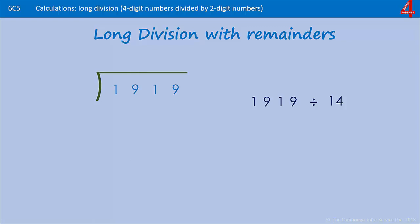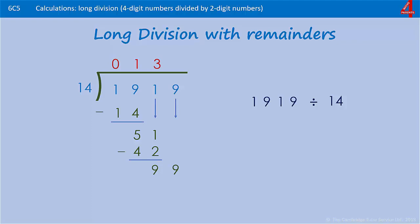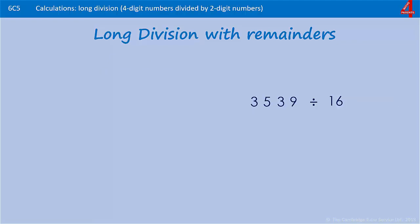To finish off, we're going to do a couple where there will be remainders. 1919 divided by 14. 14 into 1 doesn't go. 14 into 19 goes once — one lot of 14, take that away from the 19, leaves you with five. Bring down that one — how many lots of 14 in 51? That's three, and three times 14 is 42. Take that 42 away from the 51, leaving nine. Now bring down that last digit, which is nine. How many times will 14 go into 99? 14 will go into 98 seven times — seven times 14 is 98. Take that 98 away from the 99, and we have one.